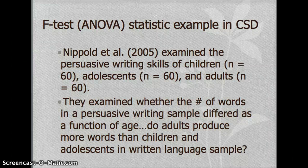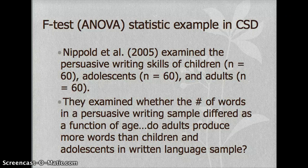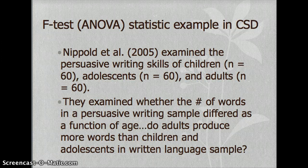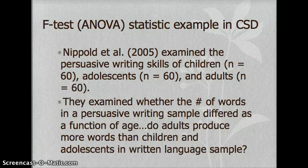Let's look at this F-test statistic example in CSD. Nippold et al. examined the persuasive writing skills of children, 60 children, 60 adolescents, and 60 adults. They examined whether the number of words in a persuasive writing sample differed as a function of age — do adults produce more words than children and adolescents in a written language sample?